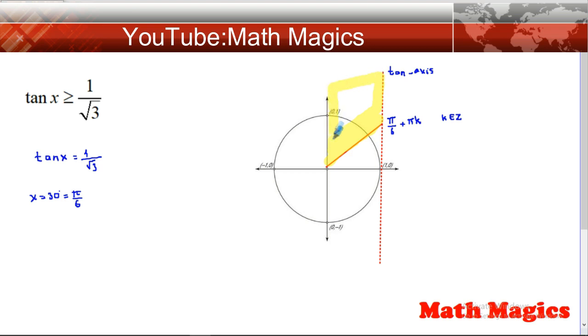So it is the yellow region and it's between 30 degrees and 90 degrees. And why are we writing πk? The meaning of πk is period.